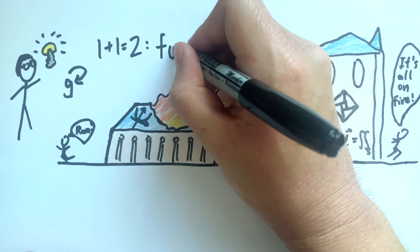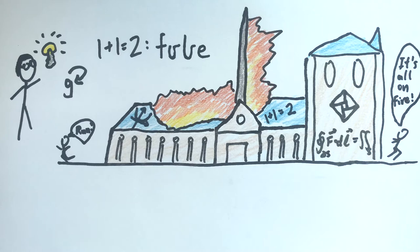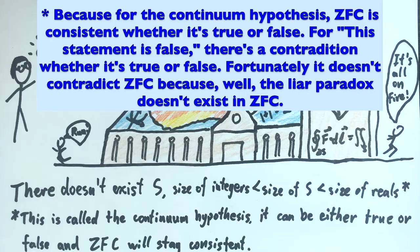One statement that can never be proved in ZFC is, there are infinities between the number of integers and the number of real numbers. And no, this doesn't fix the liar paradox.